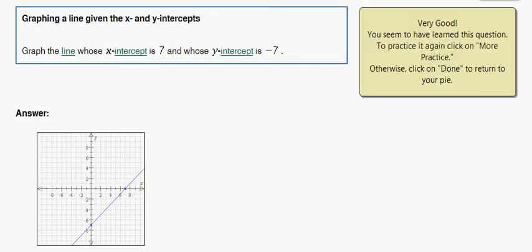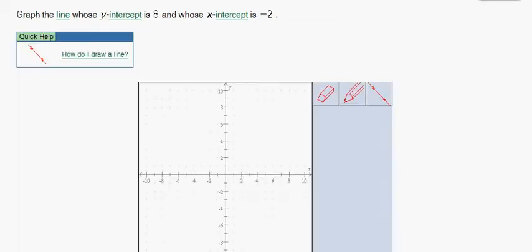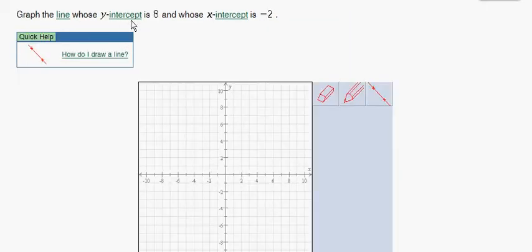Let's do another one of those. Notice here in this case, they gave us the y intercept first. So the y intercept is 8. That means positive 8. That means we're going to go 8 units up the y axis. So I'll take my pencil and plot that point.